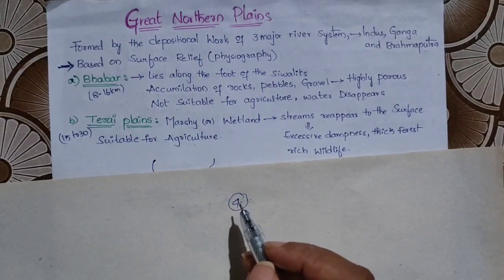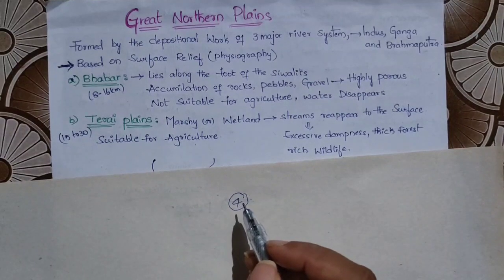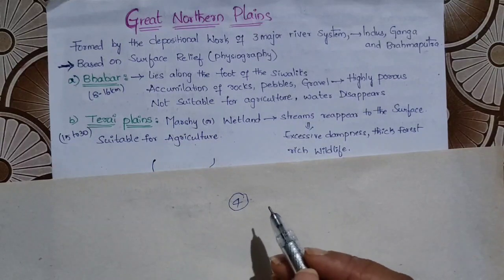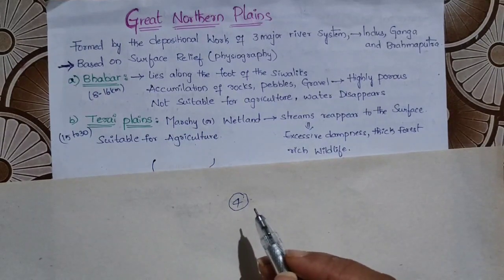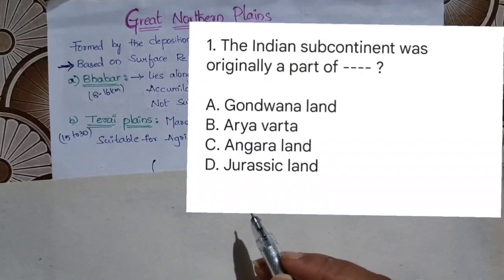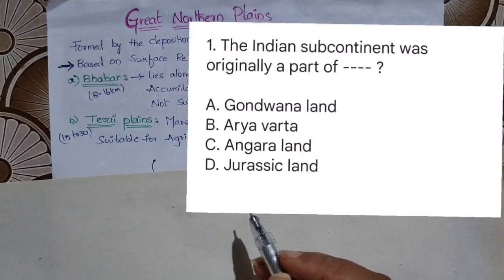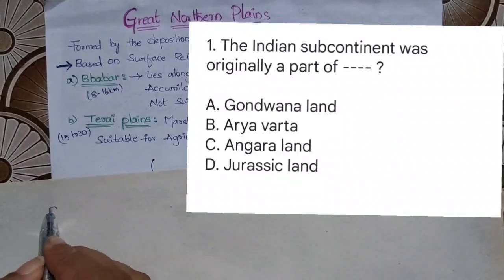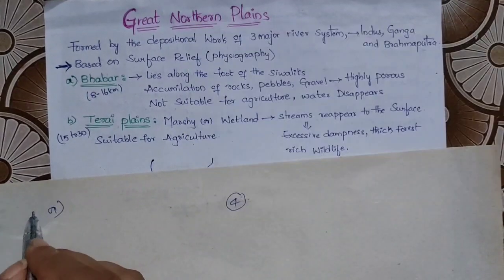Before going to Northern Plains, let's look at the pattern of questions from Himalayas. The first question: the Indian subcontinent was originally a part of — we already discussed it — the Indian subcontinent was originally a part of Gondwana Land. So our answer is option A for the first question.